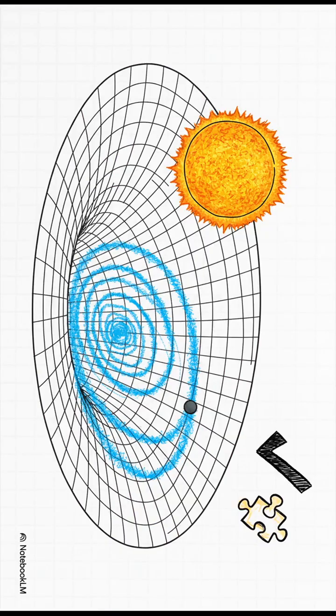So Mercury isn't being pulled, it's just following that curve in space-time. Einstein's math nailed it.